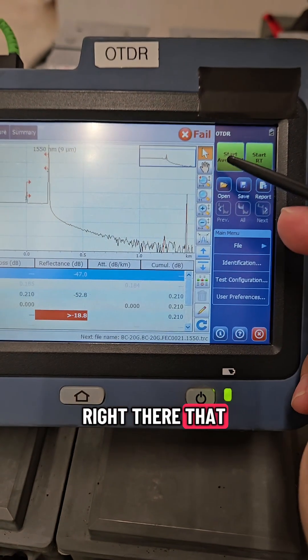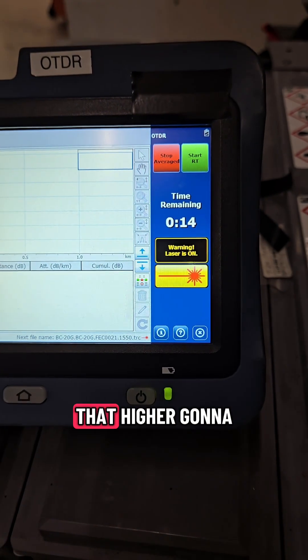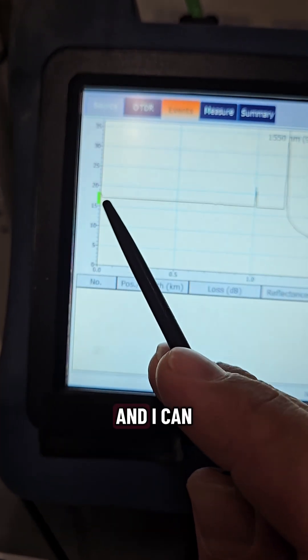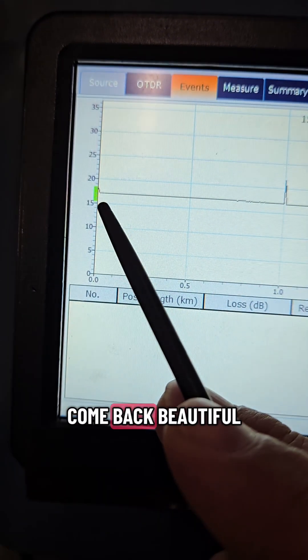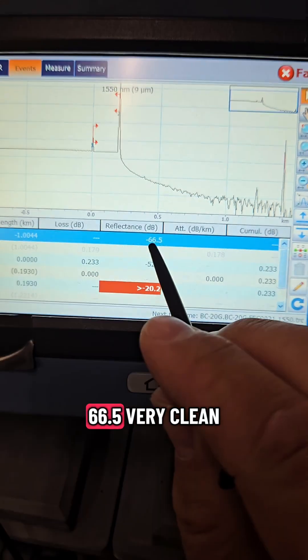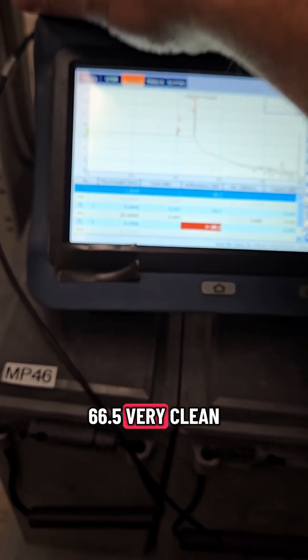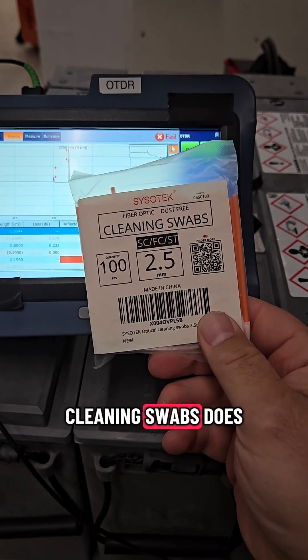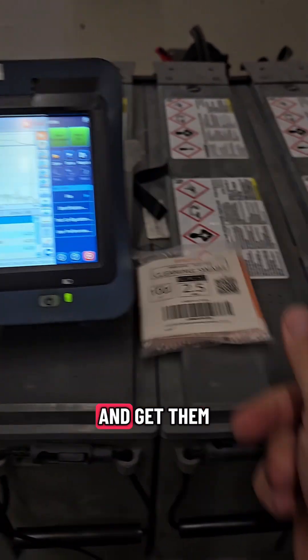And again, right there that said neg 47, we got to get that higher. Gonna redo the test here now that I've cleaned it, and I can already tell that this is gonna come back beautiful. And there you have it, neg 66.5, very clean, much improved. Sisotech cleaning swabs does the job, come and get them.